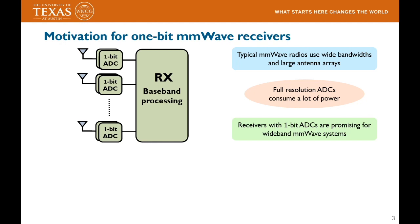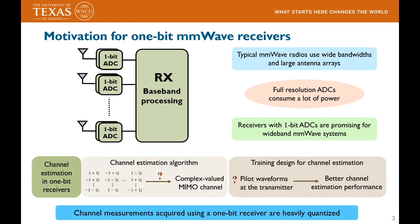In this paper, we focus on MIMO channel estimation using 1-bit receivers. This problem basically has two components. The first component is algorithmic in nature and requires developing optimization techniques that can estimate MIMO channels from just 1-bit measurements. The second component is related to training design, where the focus is to construct pilot waveforms that result in better channel reconstruction.